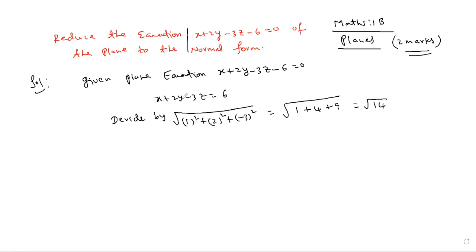Divide by √14 on both sides. This gives us: x/√14 + 2y/√14 - 3z/√14 = 6/√14.